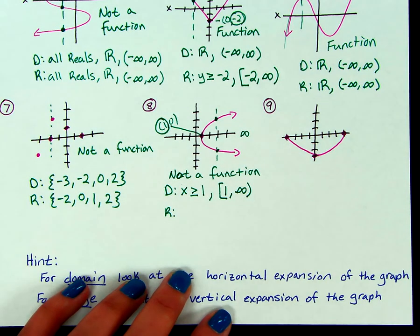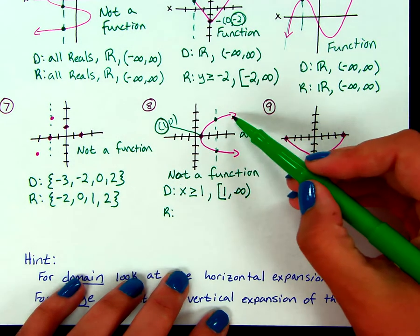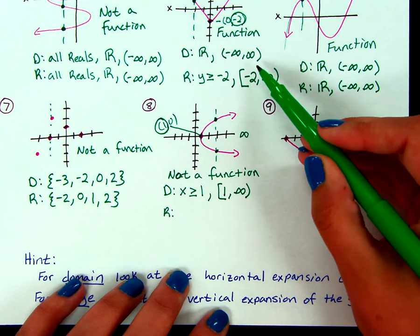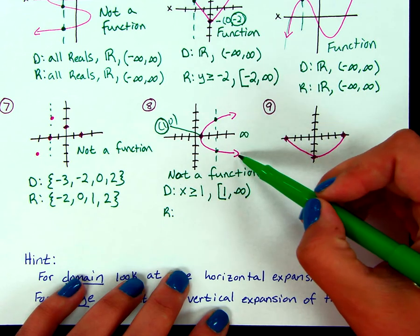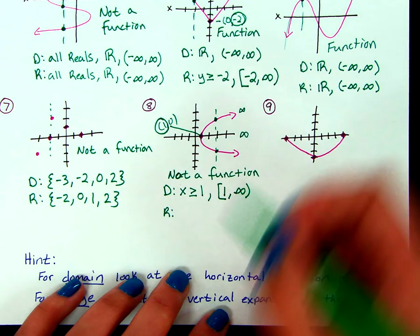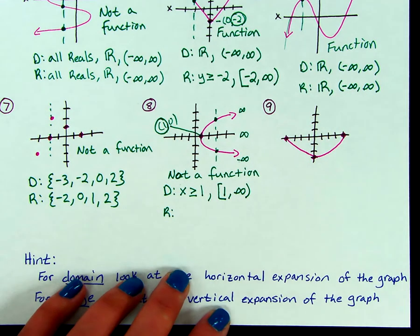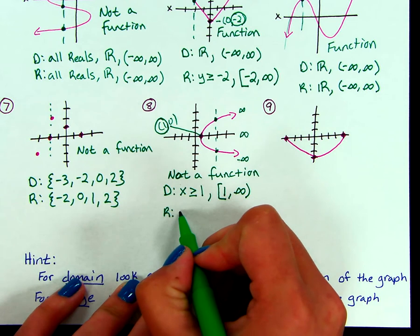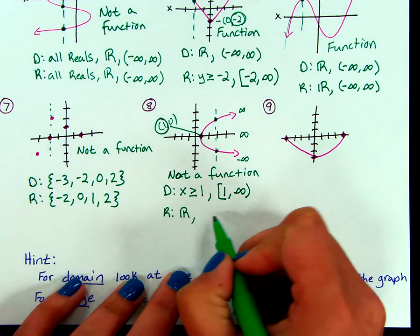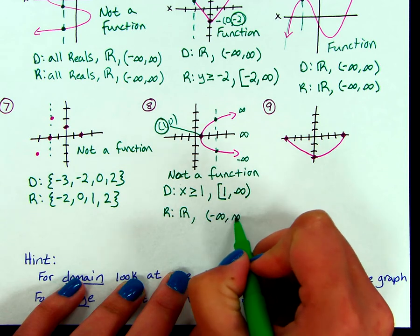For range, we're looking at the vertical expansion. This side tells me the graph is going up forever, and on this side it's going down forever. So our graph is going towards both positive infinity and negative infinity. Eventually we're going to get to all the y values, so our range is all reals. In interval notation, that's from negative infinity to positive infinity.